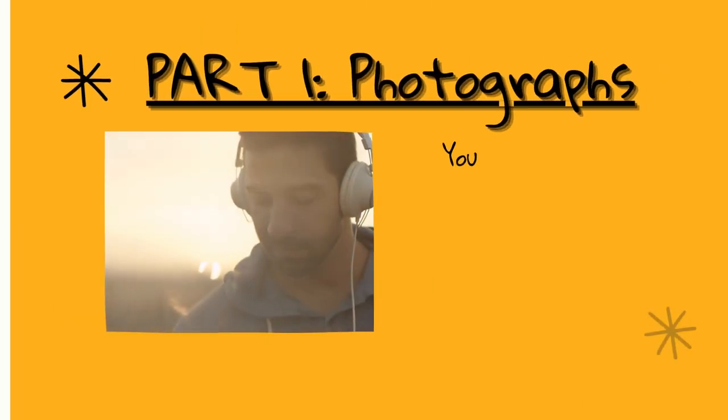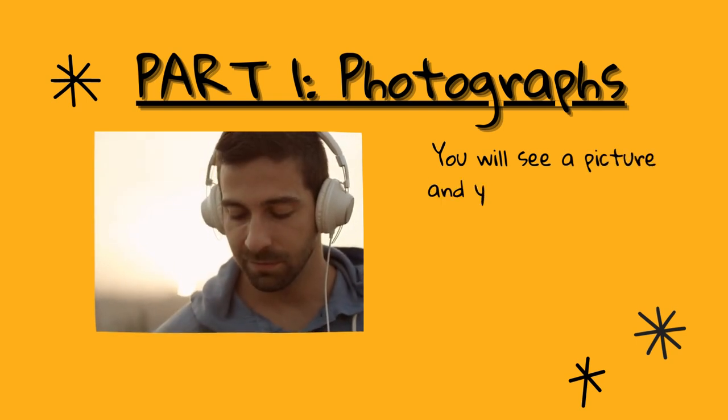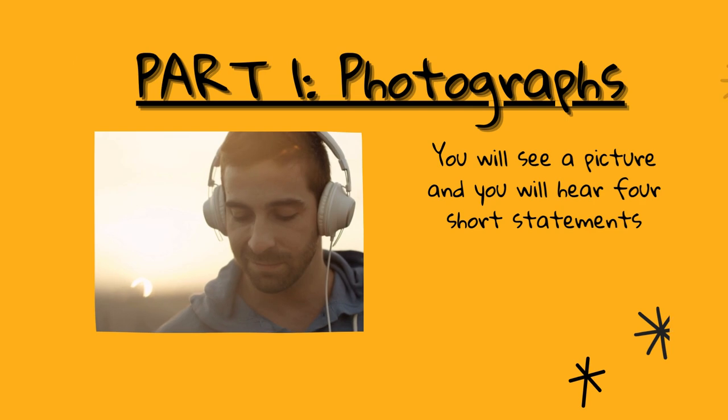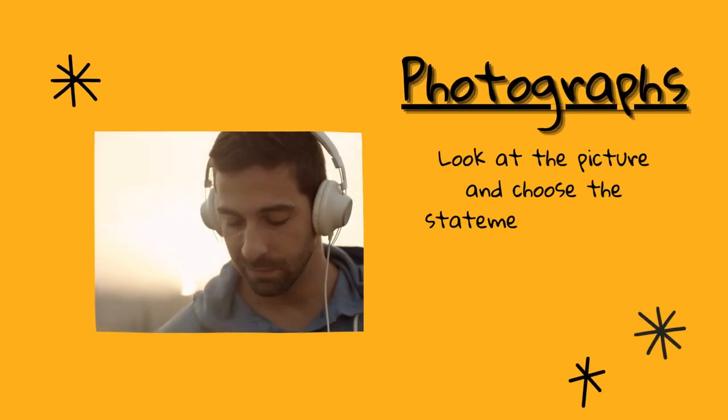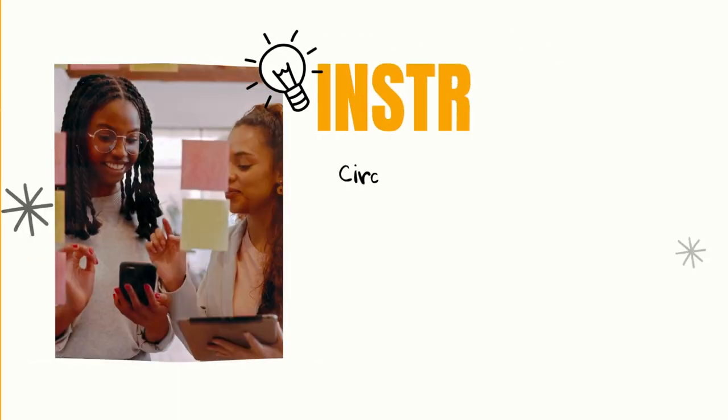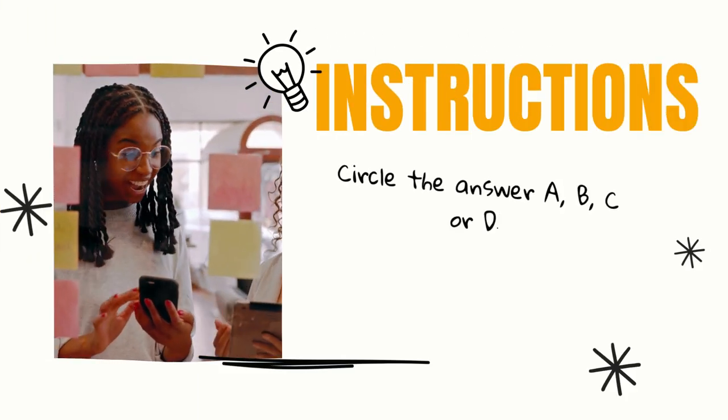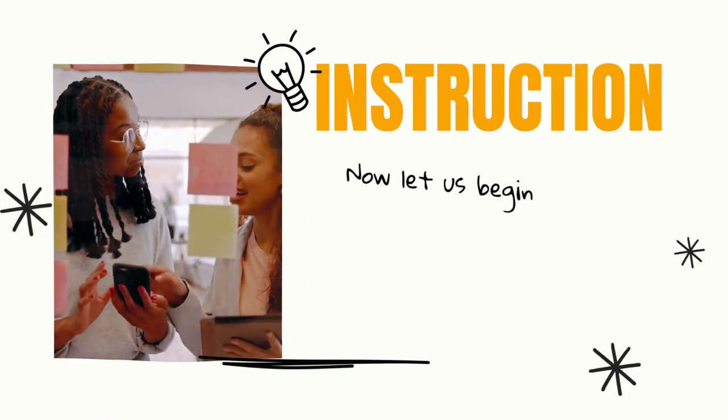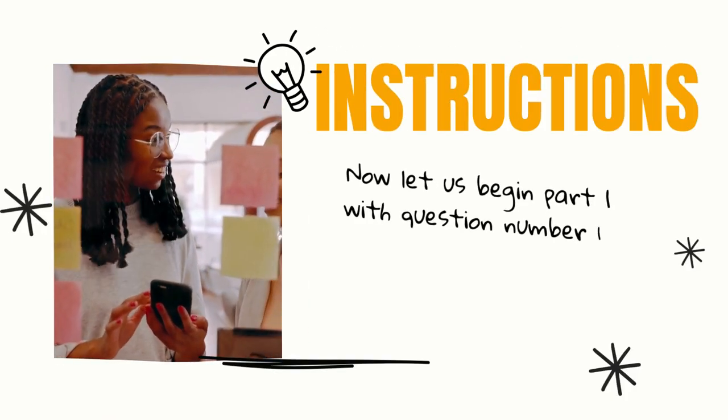Part 1. Photographs. You will see a picture and you will hear four short statements. Look at the picture and choose the statement that best describes what you see in the picture. Circle the answer A, B, C, or D. Now, let us begin Part 1 with question number 1.